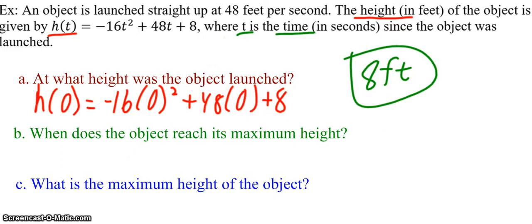Which coordinate does time represent? Time represents the x-coordinate. How do we find the x-coordinate of a vertex when we have ABC form? Remember, that's also called h. Pause the video. Find that. Unpause when you're ready to check.